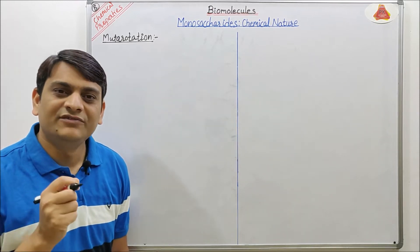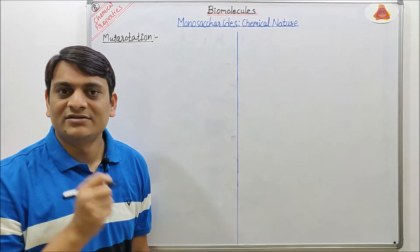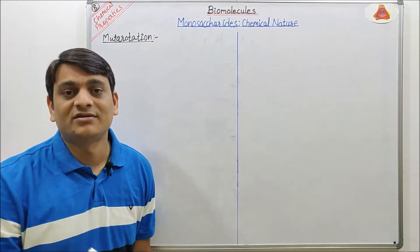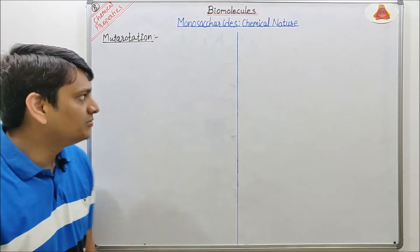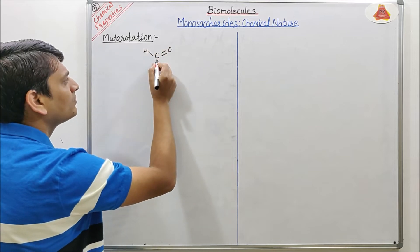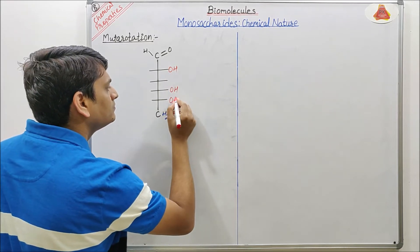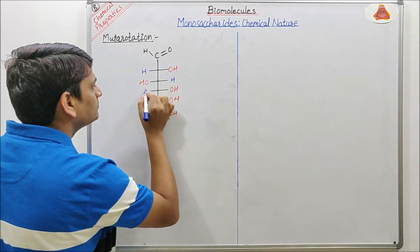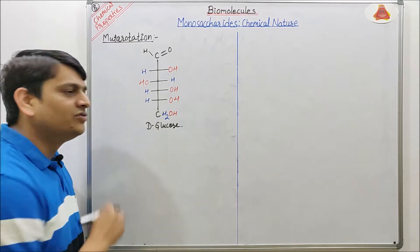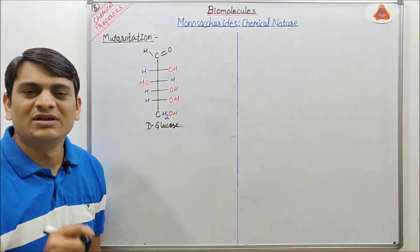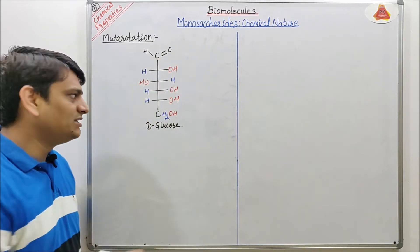To understand mutarotation, first we have to understand the cyclic structure of monosaccharides. To explain this cyclic structure, first I will draw the structure of glucose, then I will explain how the cyclic structure will be formed from that glucose. This is the structure of D-glucose, and glucose forms a stable hemiacetal between the CHO group and the OH group present in the fifth carbon.